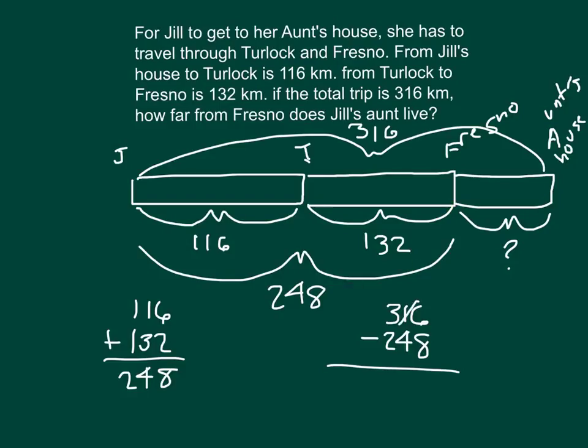6 minus 8 I cannot do. I can regroup from the tens place. That's why it's 16 minus 8, which is 8. In the hundreds place, the 3 becomes a 2, and the tens place becomes 10 minus 4 is 6. So this distance from Fresno to the aunt's house is 68.